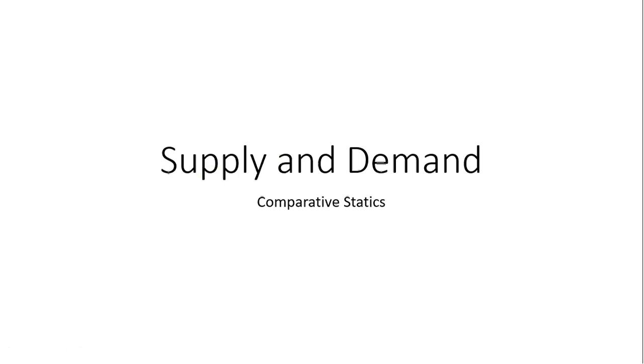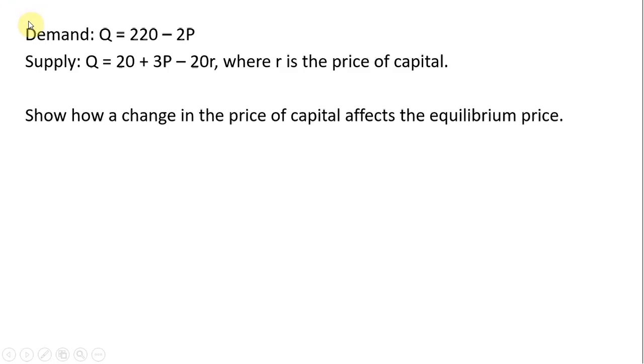Hello. In this video we're going to do some comparative statics. We have a market where demand is given by Q = 220 - 2P and supply is given by Q = 20 + 3P - 20r, where r is the price of capital. We want to first show how a change in the price of capital affects the equilibrium price.